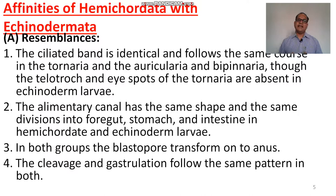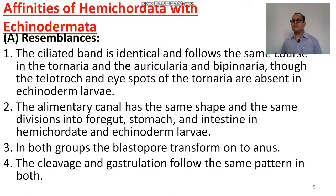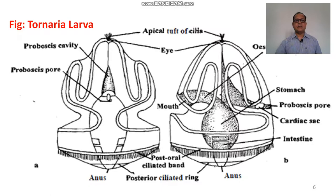Affinities of Hemichordata with Echinodermata. Resemblances: the ciliated band is identical and follows the same course in the tornaria and auricularia/bipinnaria through the telotroch. The alimentary canal has the same shape and same divisions — foregut, stomach, intestine — in Hemichordata and Echinoderm larvae. In both groups, the blastopore transforms into the anus; cleavage and gastrulation follow the same pattern.